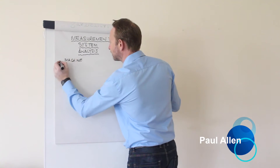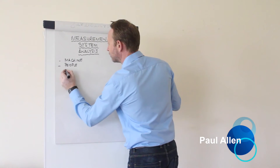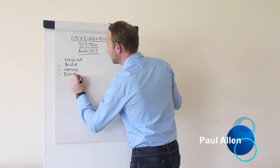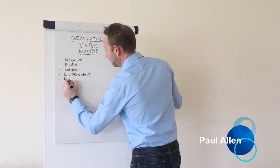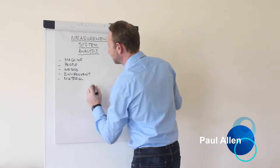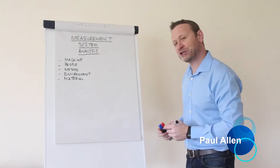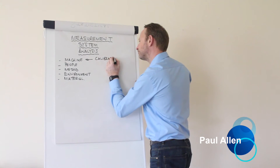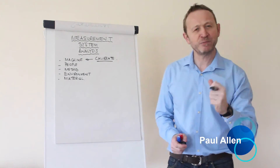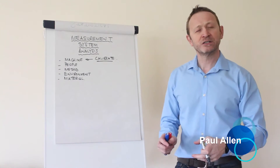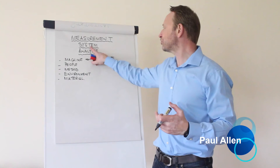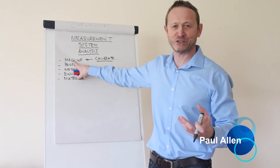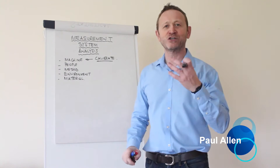Well, if you look at the elements of a system, you've got the machine, you've got the people, you've got the method, you've got the environment, you've got the material — those are all elements of your measurement system. If you say 'I calibrate,' which one of those are you getting under control? Calibration is all about the machine. The people, the material, the method, the environment — those are not getting under control. All of those constitute a measurement system. This is not a measurement system; this is just a piece of equipment.